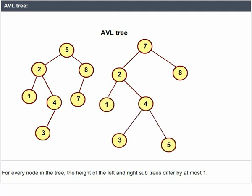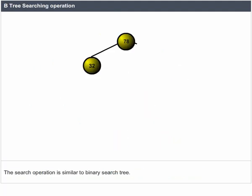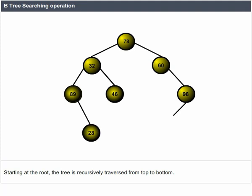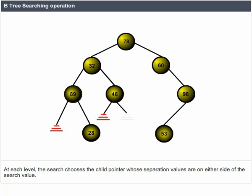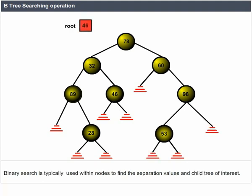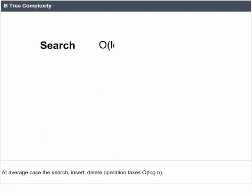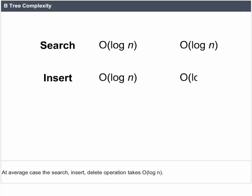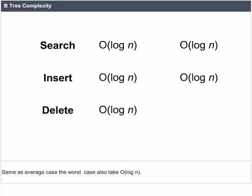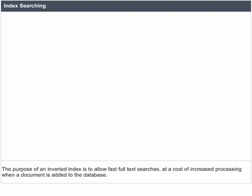B-tree searching operation: starting at the root, the tree is recursively traversed from top to bottom. At each level, the search chooses the child pointer whose separation values are on either side of the search value. Binary search is typically used within nodes to find the separation values and child tree of interest. B-tree complexity: at average case and worst case, the search, insert, and delete operations all take O(log N).